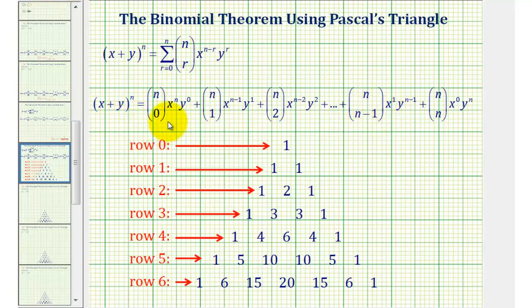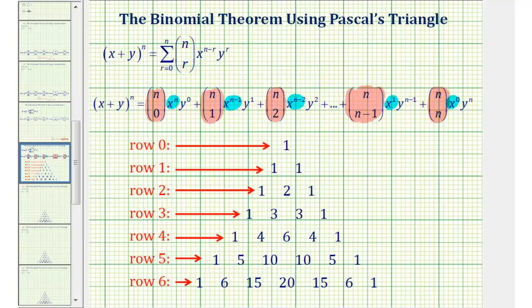Notice in expanded form each term has three factors where one factor consists of a combination. Each term contains a factor of x from the first term in the binomial, and each term also contains a factor of y from the second term in the binomial. So while this looks fairly involved, there is a nice pattern to make the binomial theorem easy to remember and apply.